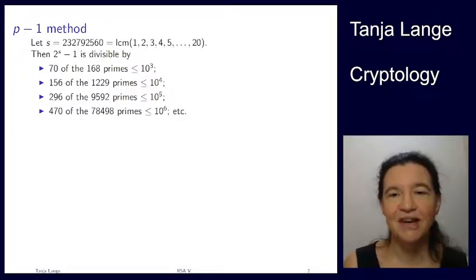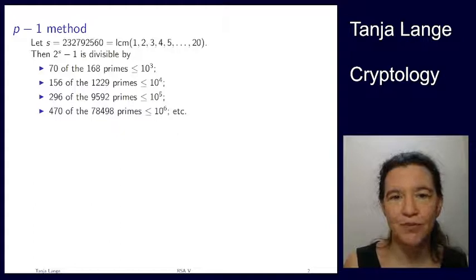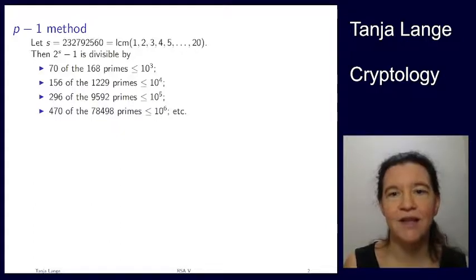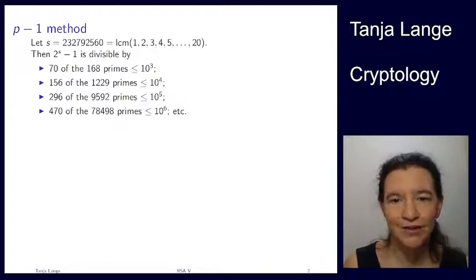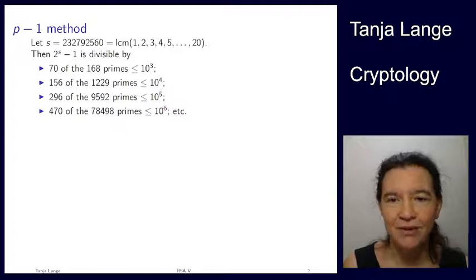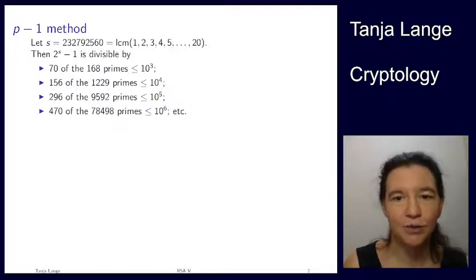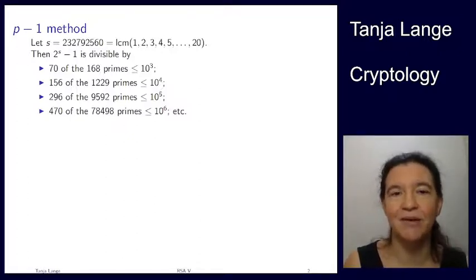We have now seen the general plan of how factorizations work and we have already seen Pollard's rho method. Now I'm going to go for the p-1 method. The p-1 method is also due to Pollard, so there's a lot of Pollard in computational number theory and therefore in cryptology, which is using this kind of number theory.